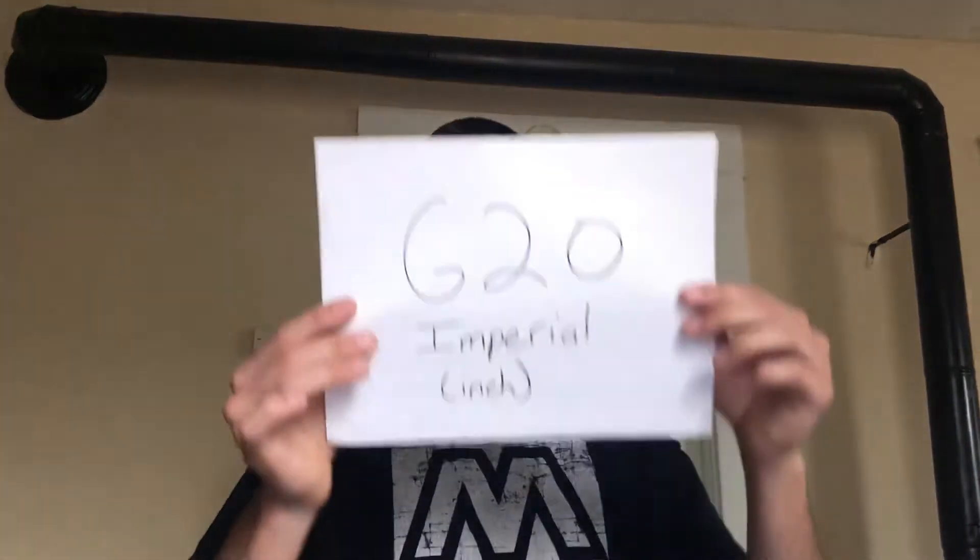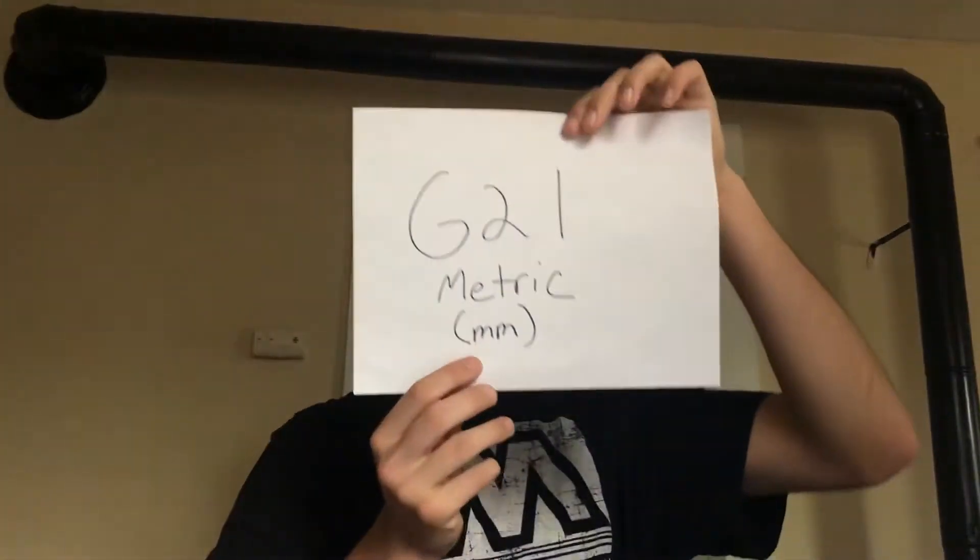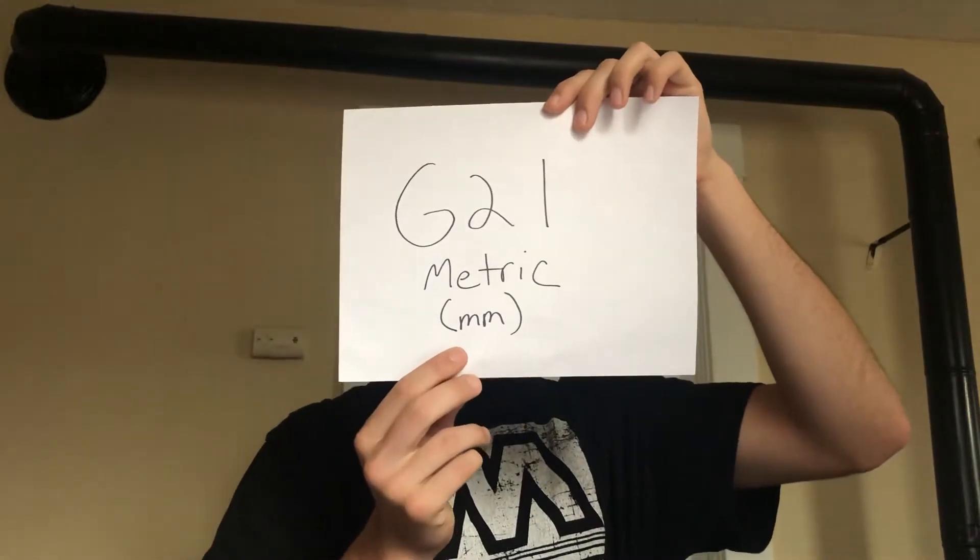Today's lesson is a quick and easy one: G20 and G21. What are these G-codes? They are the G-codes that let the machine and the controller know how you want to move your axis — specifically, whether you're moving in inches or millimeters, metric versus imperial. G20 tells the machine you are in imperial (inches), and G21 tells the machine you are in metric (millimeters).